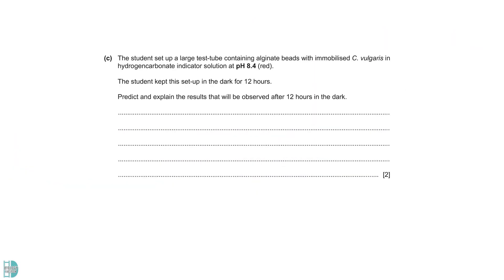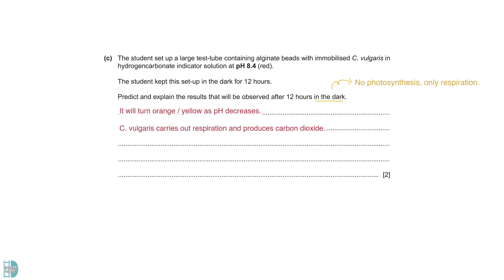Part C shows another experiment where the setup is kept in the dark for 12 hours. Predict and explain the results after 12 hours in the dark. Without light, C. vulgaris does not carry out photosynthesis, only respiration. Carbon dioxide will be produced, which causes a decrease in pH. The solution will turn orange or yellow.